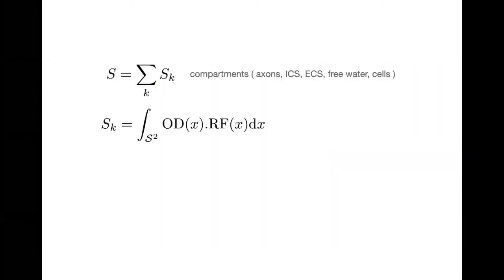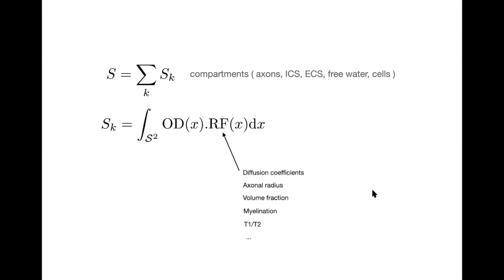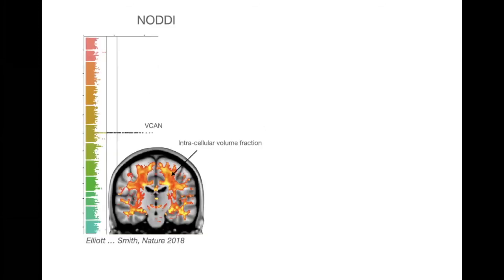Coming back to my intro slides about the standard model of diffusion and compartments — the idea of an orientation distribution and a response function — the response function is where the good stuff is as far as microstructure is concerned: diffusion coefficients, axon radii, volume fractions, myelination, etc. Once you fit that to a voxel in a subject, you're interested in seeing how that quantity might change, for example in disease, between subjects, or in aging. Here's an example: in the UK Biobank, some people in our lab have looked at the genetic correlates of one of the NODDI parameters, intracellular volume fraction, and throughout white matter across about 10,000 to 40,000 subjects, this quantity correlates with a particular gene. But one problem with NODDI is that it makes quite a lot of assumptions — for example, the diffusivities are fixed, not fitted to the data, because otherwise it is an under-constrained problem.